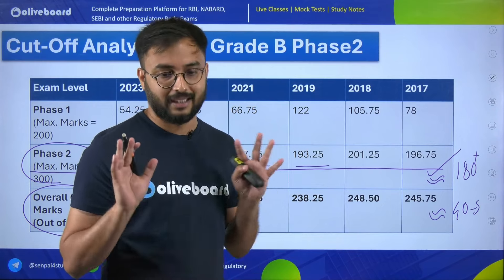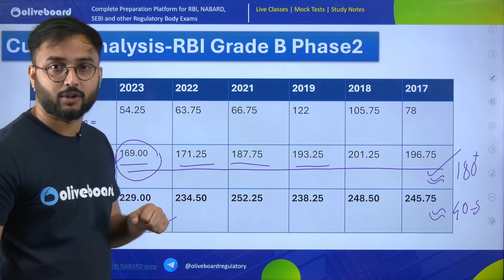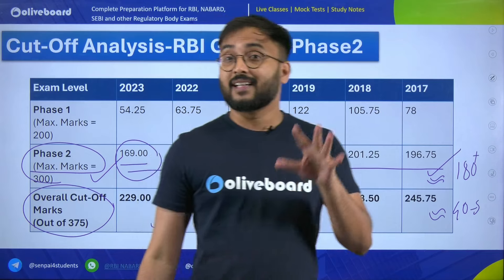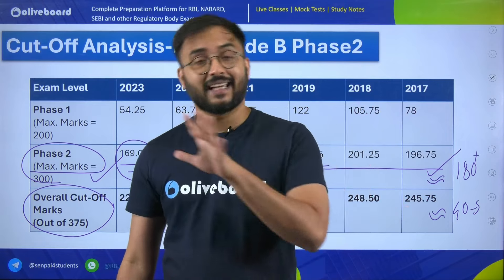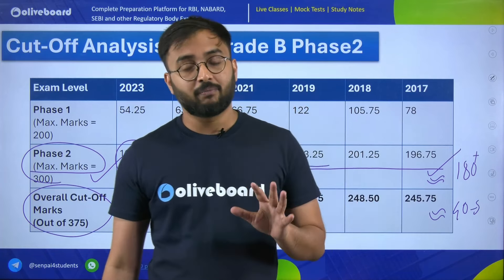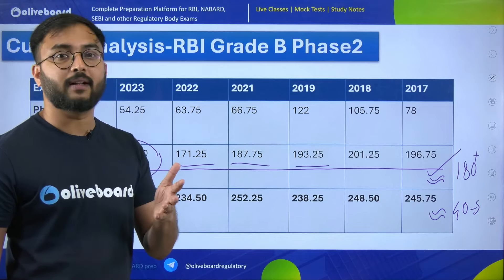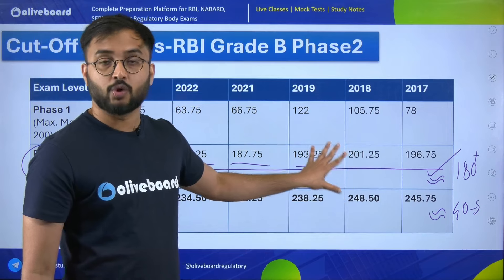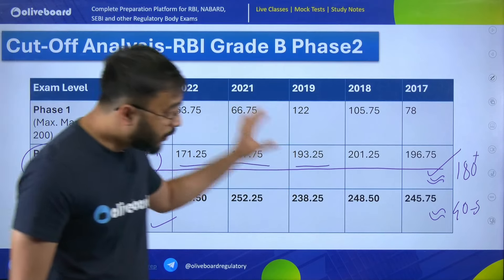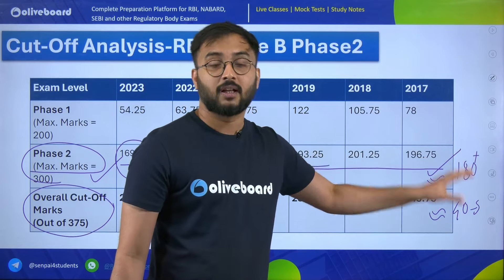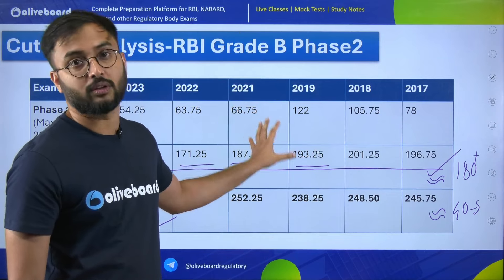If you see these overall maximum and minimum marks, you get an idea that the average cutoff for phase 2 examination is 180 plus marks. So if you score 180 plus marks and add 40 to 50 marks from the interview, you will clear the overall cutoff which is close to 230. So if you want to get 180 marks in phase 2, we've already discussed you need 75 plus marks in finance and management, and now we're discussing 75 plus marks in ESI — a combined total of 150 marks.